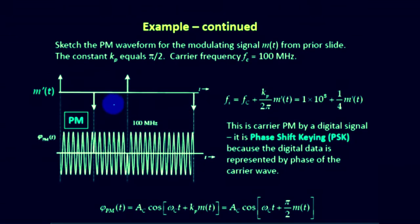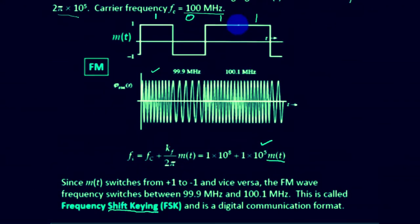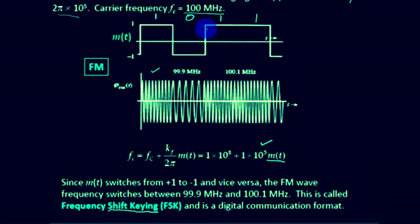Next we sketch the PM phase modulated signal for the same modulating signal M of t, with sensitivity constant Kp equal to pi by 2 and carrier frequency 100 megahertz. For PM we take the derivative of M of t. There is a step increase from minus 1 to plus 1, producing an impulse of strength plus 2. The slope is zero in the flat region, so the derivative is zero there. Then there is a negative impulse of strength minus 2, and this pattern repeats.